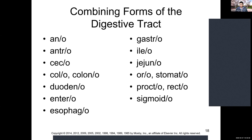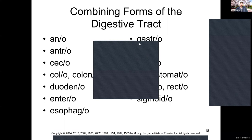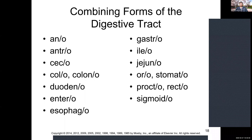We finished going through the pathway: mouth, esophagus, stomach, small intestine broken down into DJI — duodenum, jejunum, and ileum — then the large intestine commonly known as the colon, starting with the cecum, then the ascending colon, transverse colon, descending colon into the sigmoid colon, which connects to the rectum and then the anus. These terms like cec, ceco, colo, duodeno, and entero should all be fairly familiar.